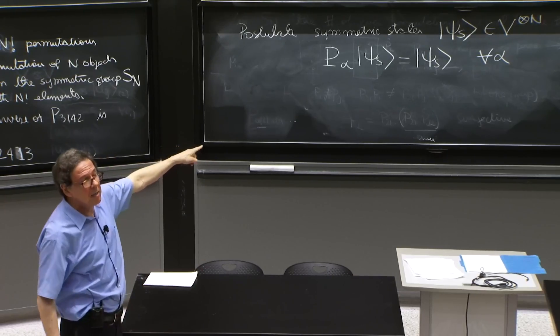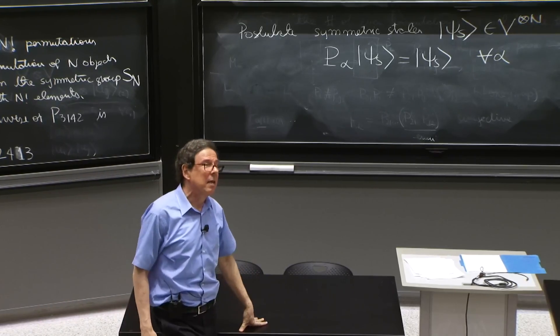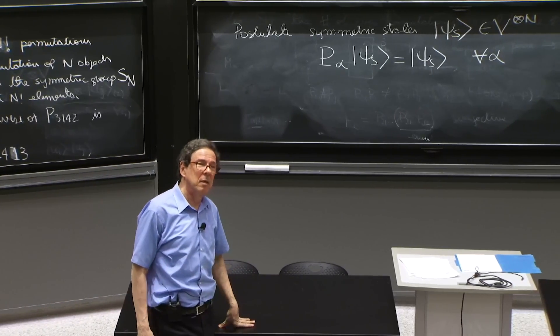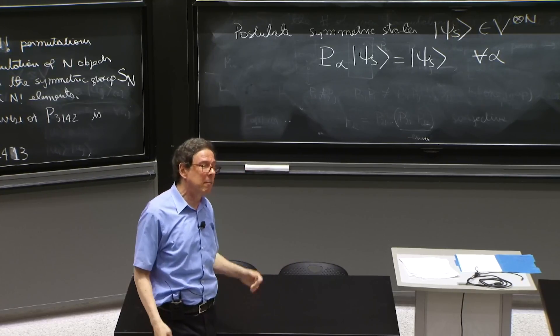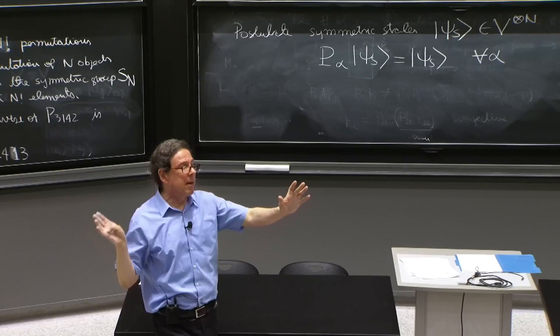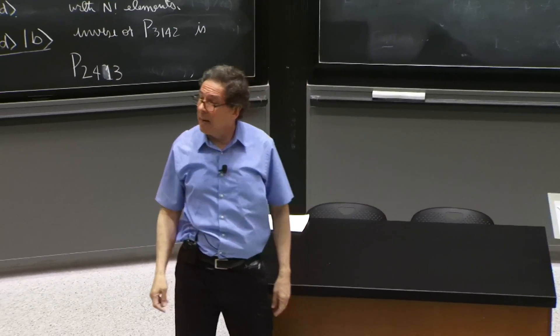So if there are symmetric states, they cannot form a basis in the full Hilbert space. They must be some smaller space. So we should be able to reach them by a projector into a subspace of symmetric states.